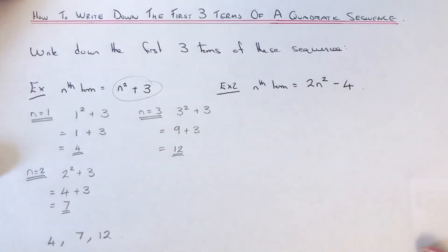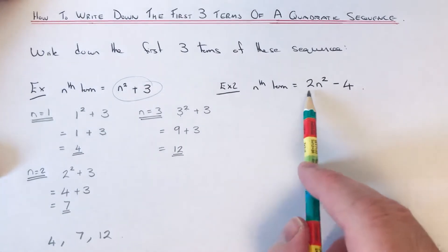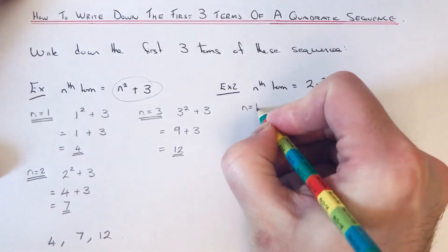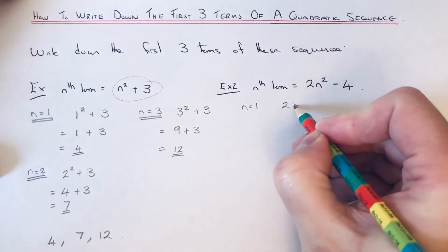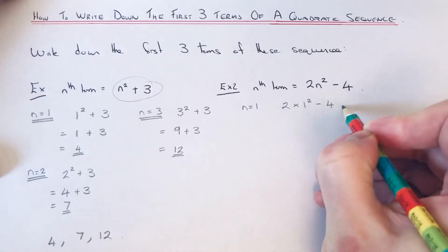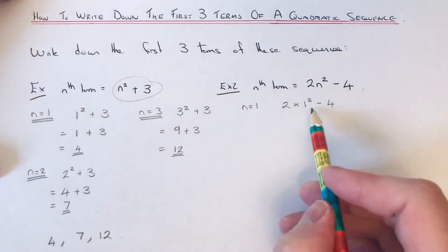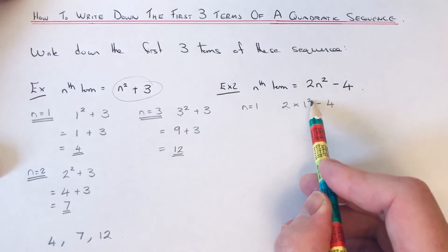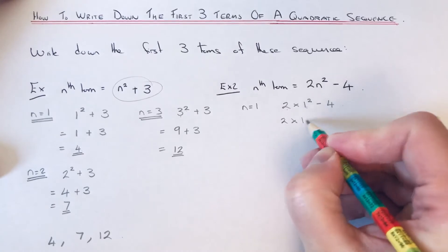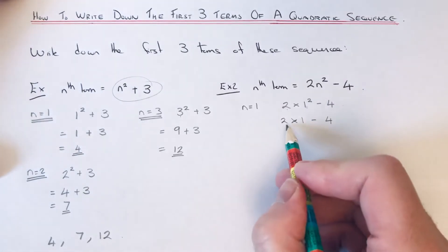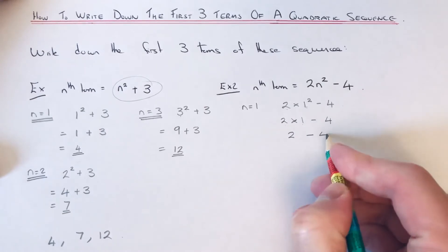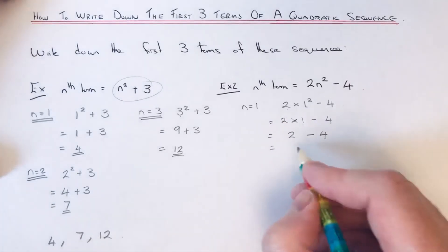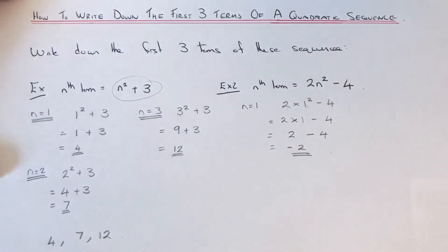So let's move on to the second example. This one is a little bit harder. This time we have 2n squared take away 4. To get our first term we substitute n equals 1, so it will be 2 times 1 squared take away 4. You need to work out the 1 squared before you multiply it by 2 — 1 squared is 1. So it will be 2 times 1, take away 4. 2 times 1 is 2, take away 4. Make sure you keep it in the right order — so 2 take away 4 is minus 2. That is our first term.